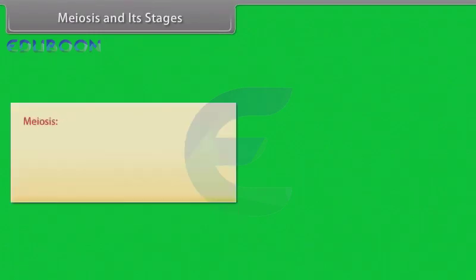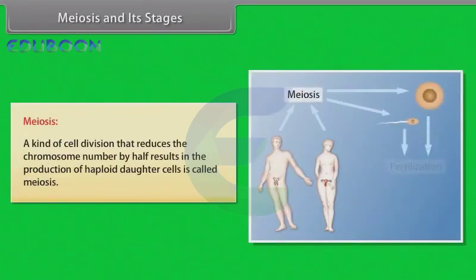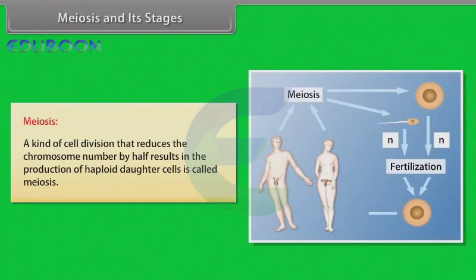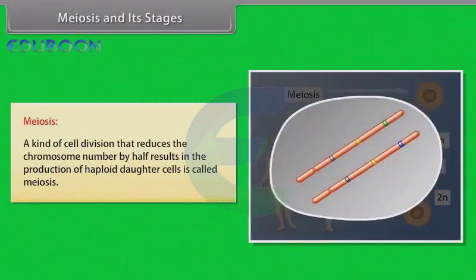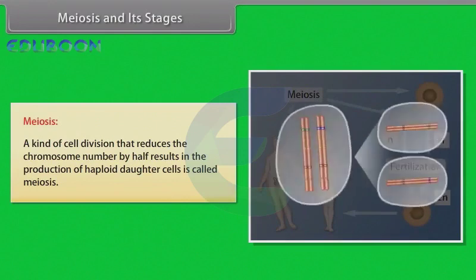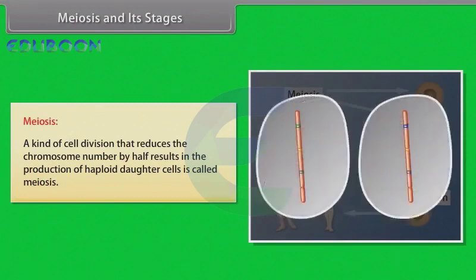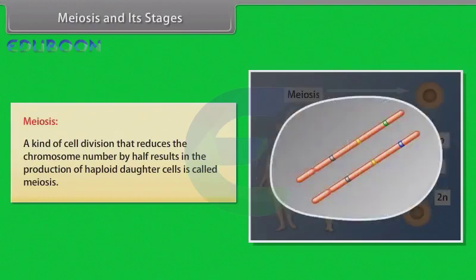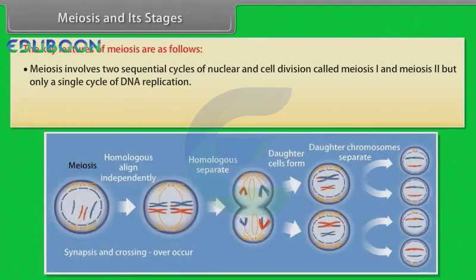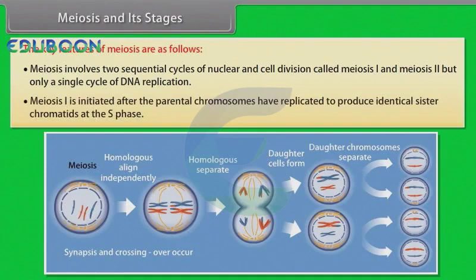Meiosis and its stages. The production of offspring by sexual reproduction includes the fusion of two gametes, each with a complete haploid set of chromosomes. Gametes are formed from specialized diploid cells. This specialized kind of cell division that reduces the chromosome number by half results in the production of haploid daughter cells. This kind of division is called meiosis. Key features of meiosis: Meiosis involves two sequential cycles of nuclear and cell division called meiosis I and meiosis II, but only a single cycle of DNA replication. Meiosis I is initiated after the parental chromosomes have replicated to produce identical sister chromatids at the S phase.